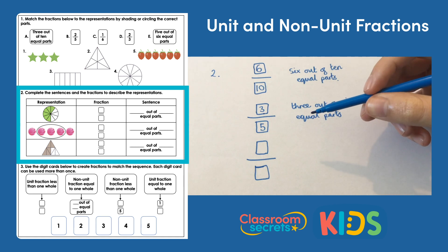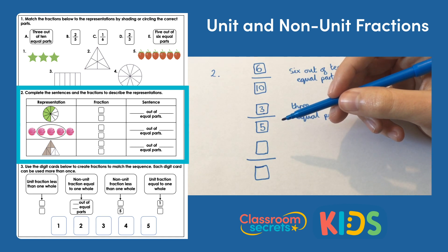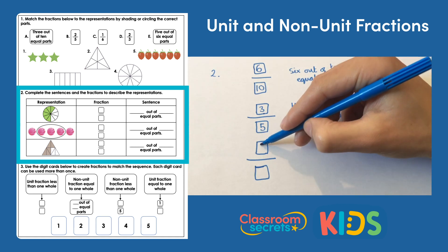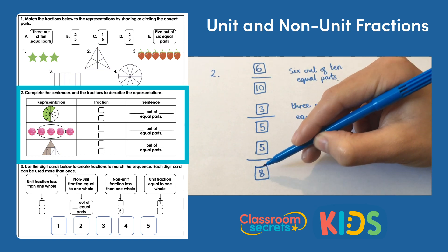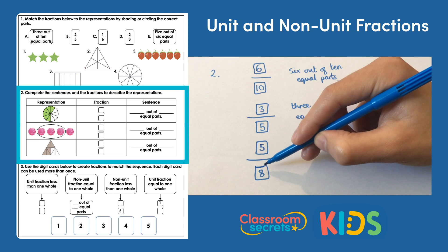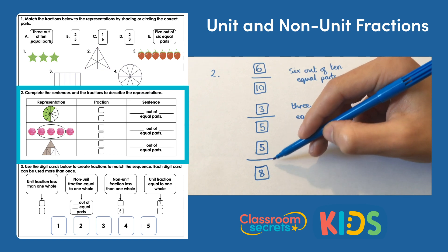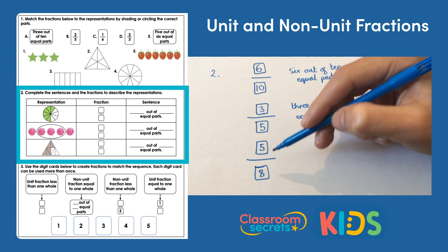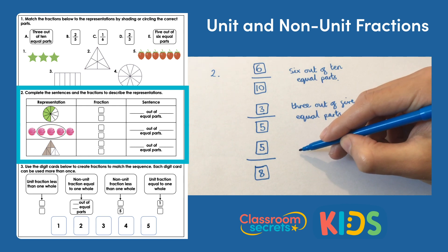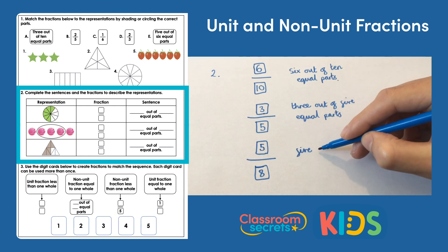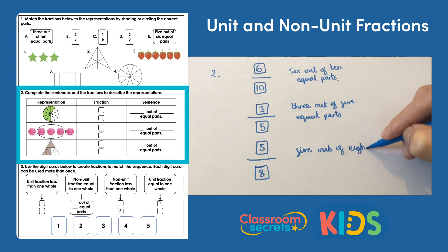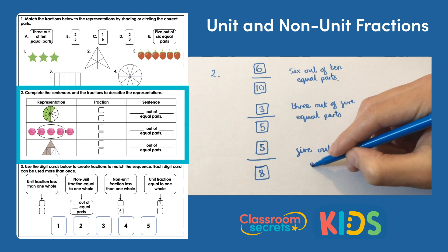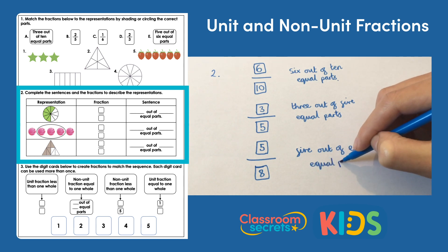For the final one, there are five parts shaded brown and eight parts altogether. So five eighths have been shaded — that's what your fraction would look like. Written down as a sentence, we would have five out of eight equal parts.